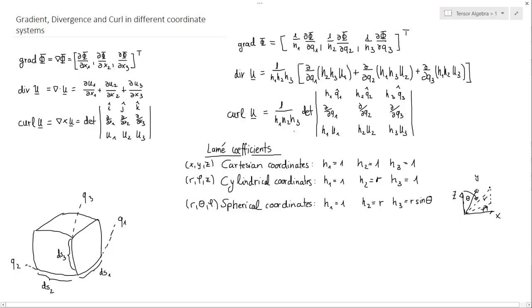There's also a formula for the curl: (1/(h1 h2 h3)) times a determinant. The first row is h1·ê1, h2·ê2, h3·ê3 — the unit vectors along each coordinate. The second row is the partial derivatives with respect to q1, q2, q3. The third row is h1·u1, h2·u2, h3·u3, the components of your vector u = (u1, u2, u3).